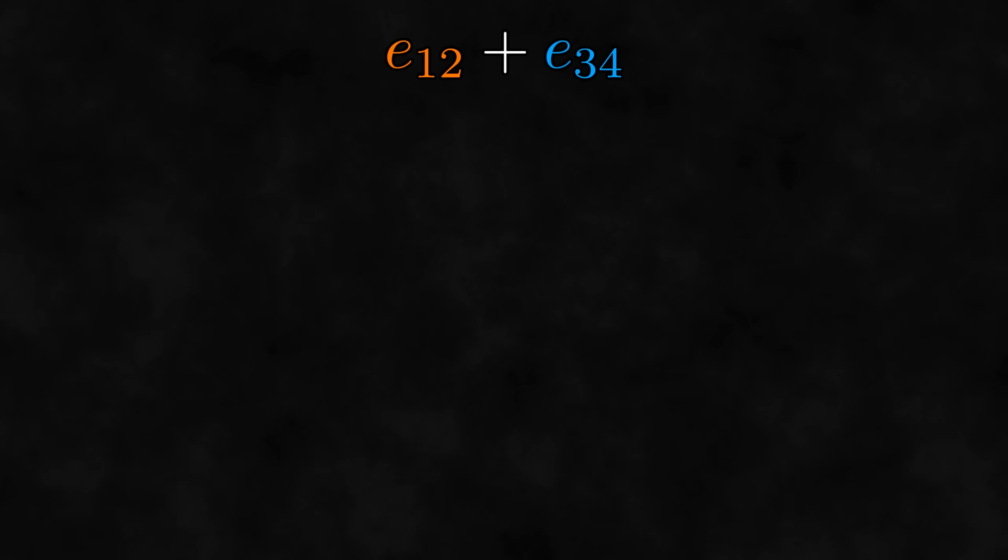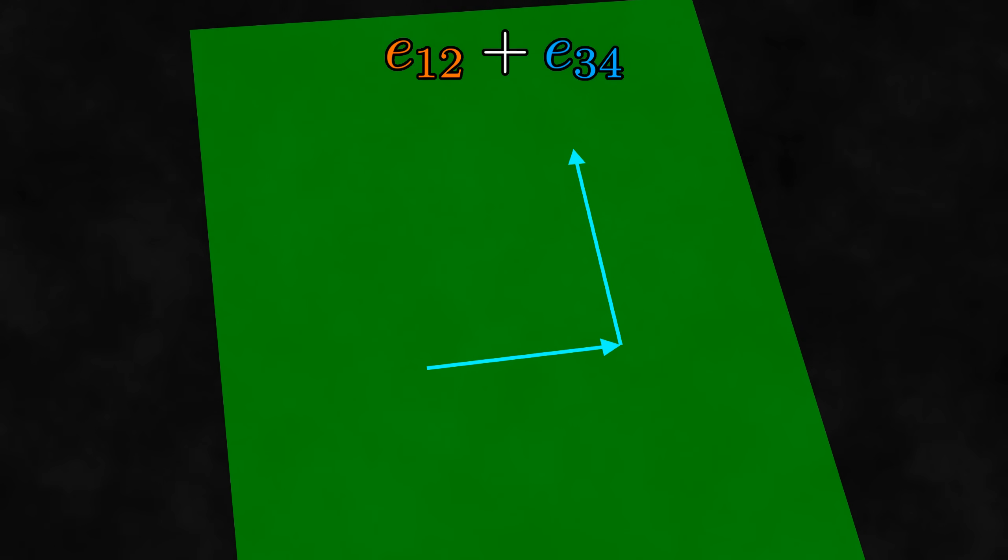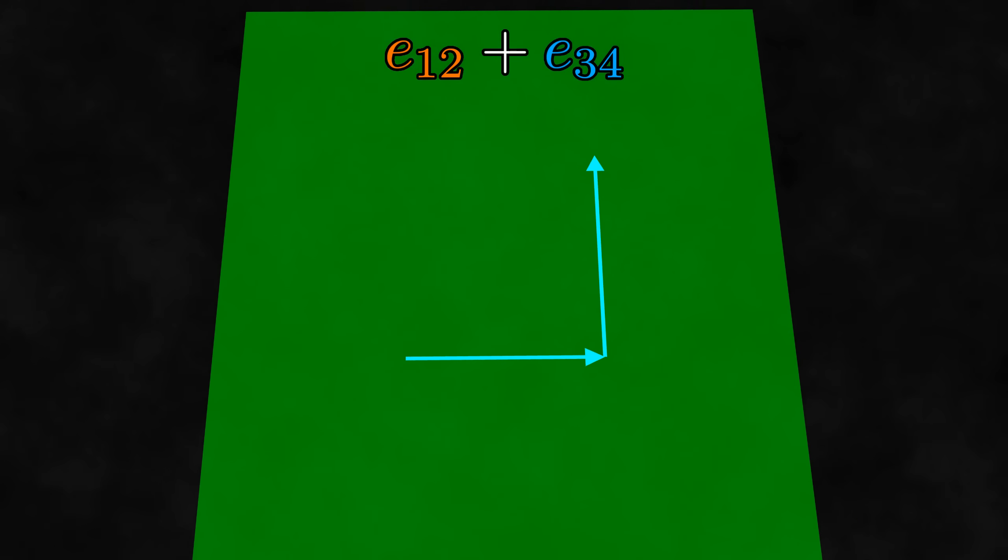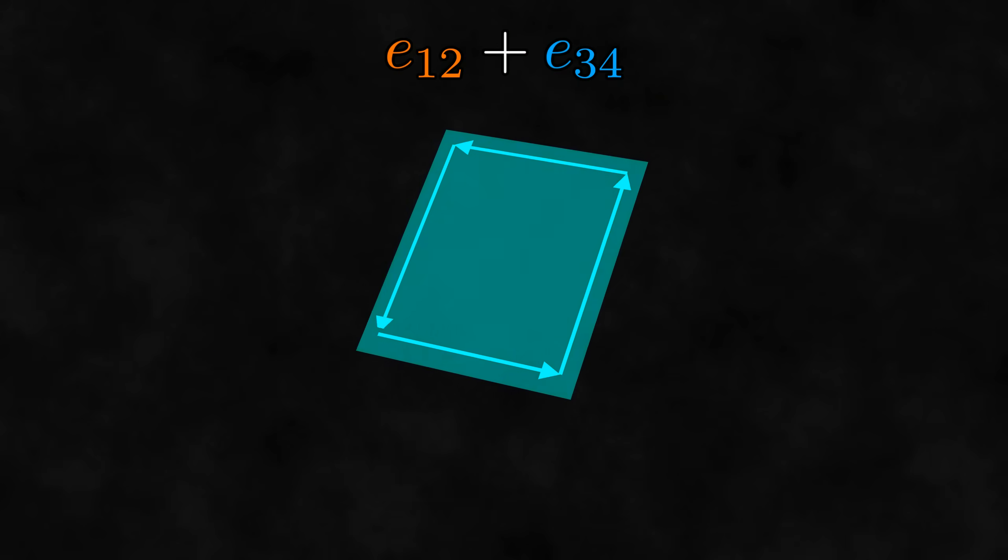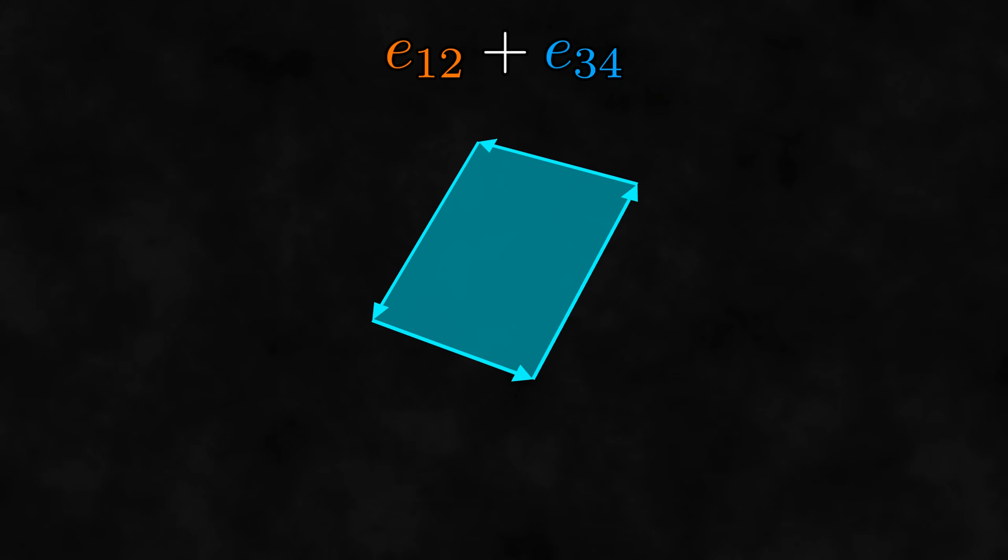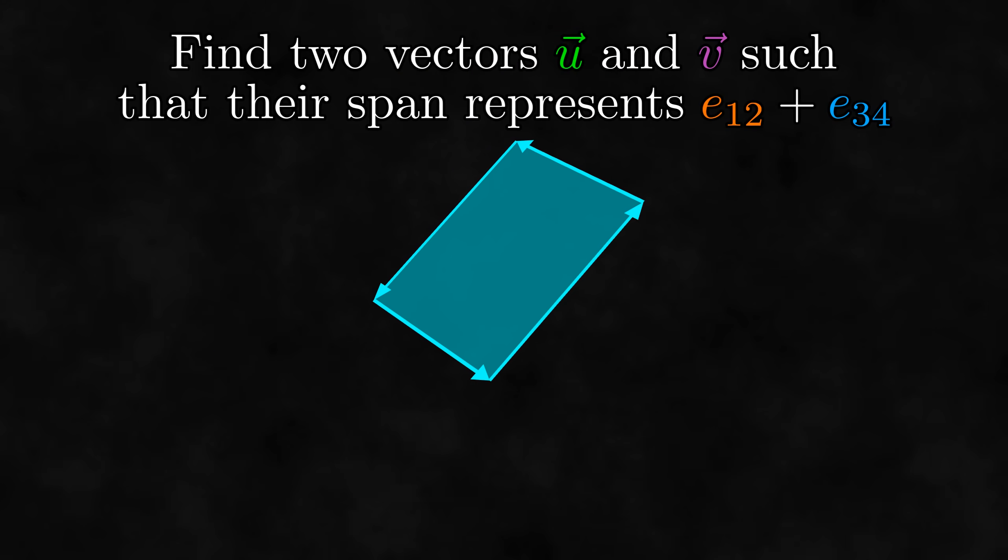Well, let's try. Every plane can be described using two vectors that span the plane. When it comes to bivectors, we usually think of these vectors as being two vectors making up a parallelogram. So we need to find two vectors such that their span is the plane that E12 plus E34 would be in.